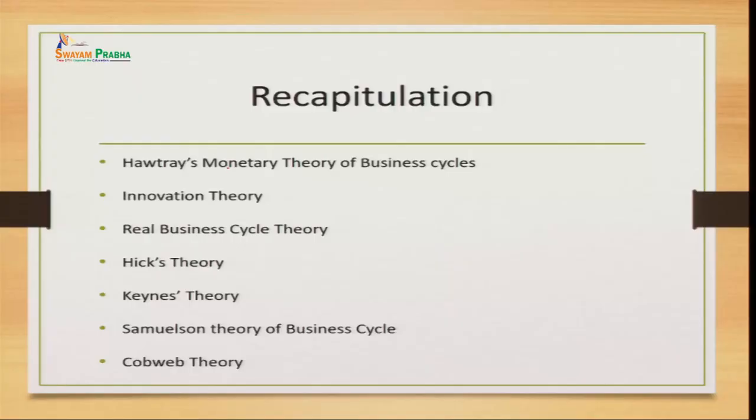We talked about Hawtrey's monetary theory of business cycle, where Hawtrey believes that these phases take place because of change in the money supply. This money supply usually changes because of change in the bank rate. Financial institutions make changes to the interest rate and stimulate the increase and decrease of supply of money in the market.